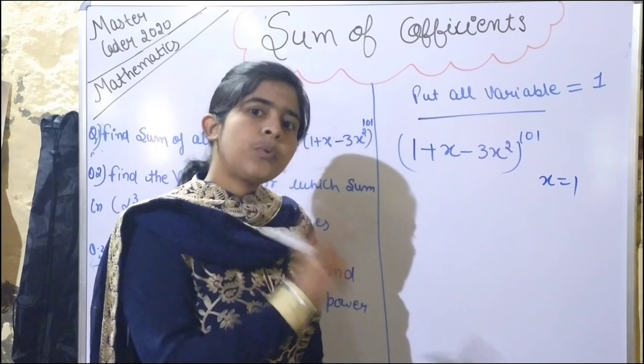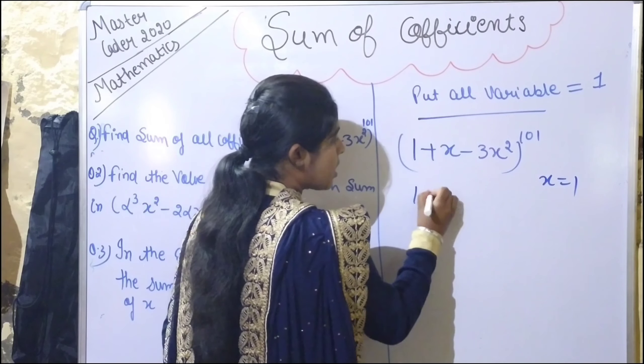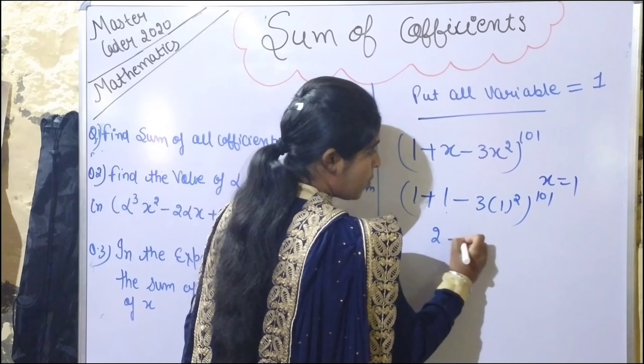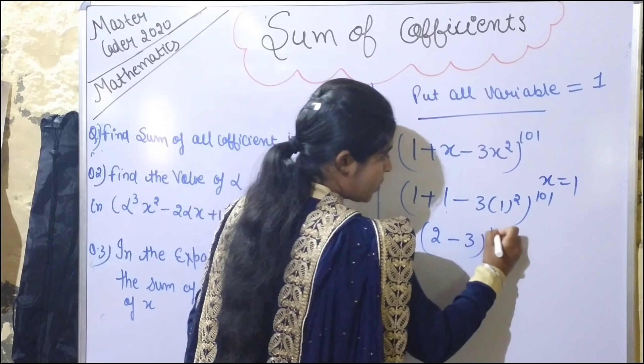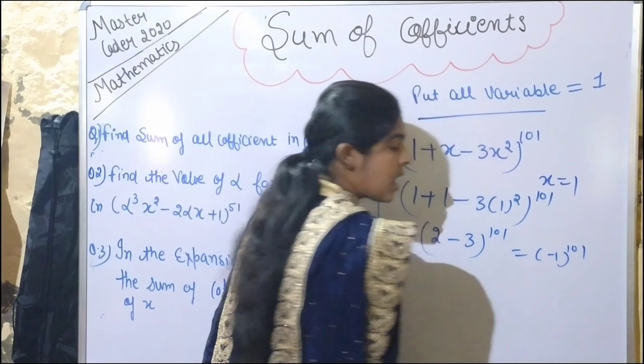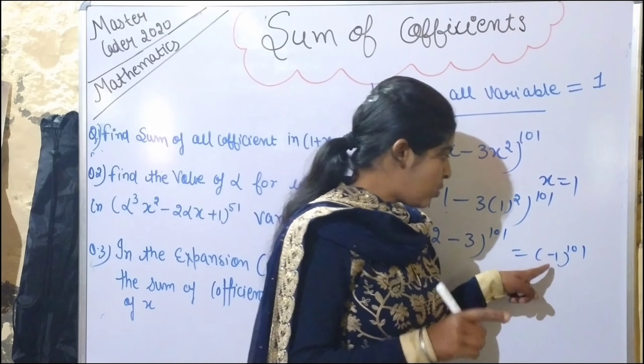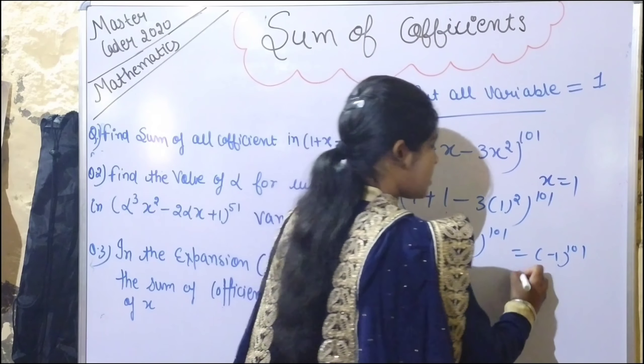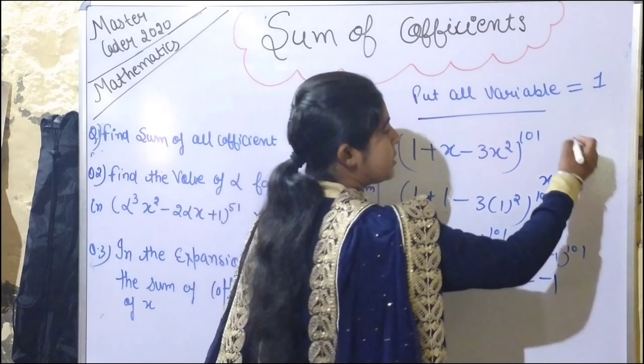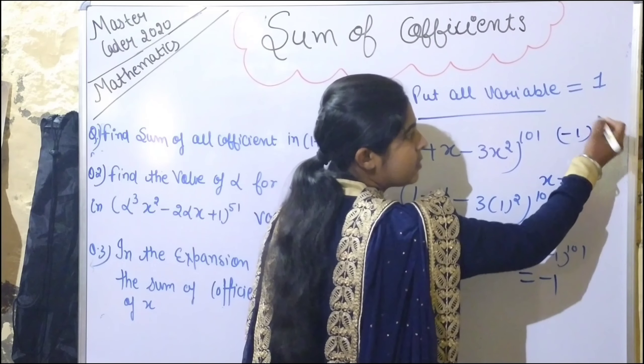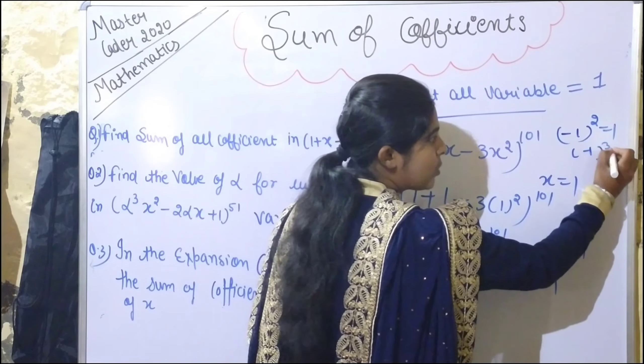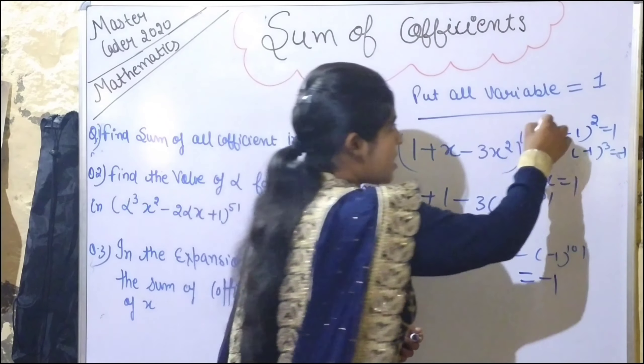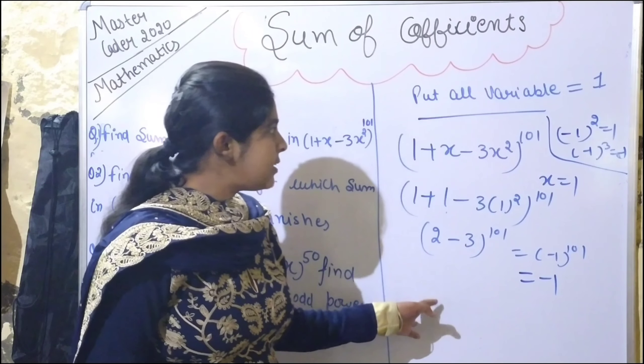What we have to do is put x equal to 1. Whatever the variable is, put it equal to one. So: (1 + 1 - 3(1)²)^101 = (1 + 1 - 3)^101 = (-1)^101. Since the power is odd, we know that (-1) to an odd power equals -1.